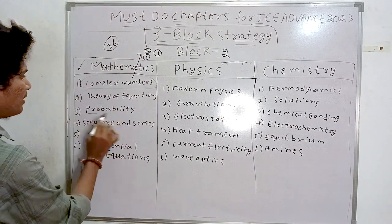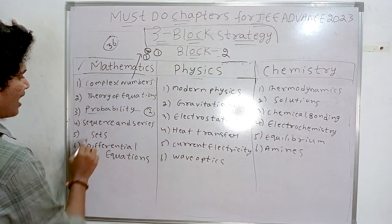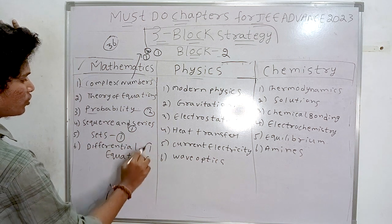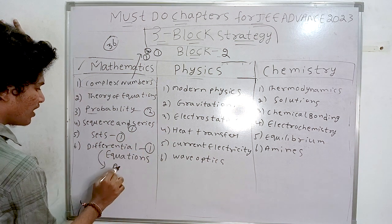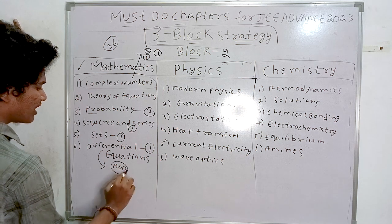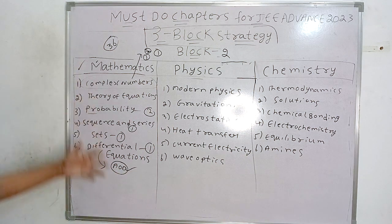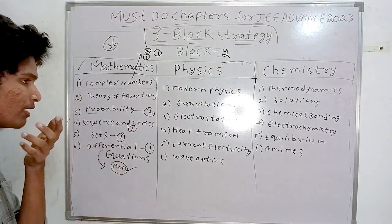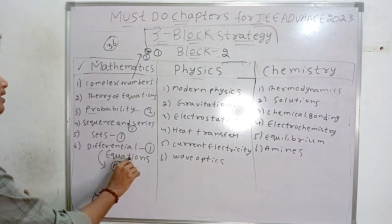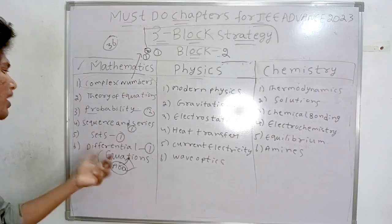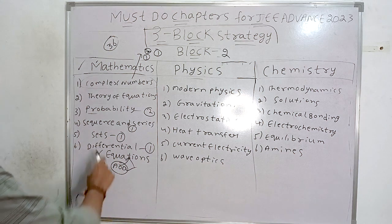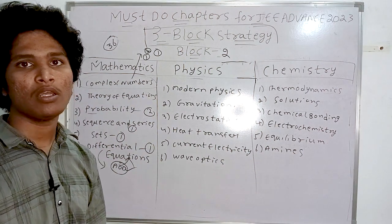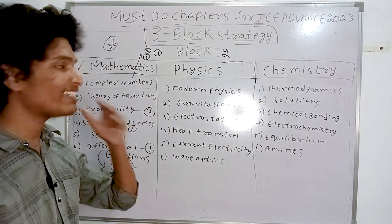Other block two math chapters: theory of equations, probability (two questions), sequence and series (one question), sets (one question), and differential equations (one question). Differential equations also involve a mixture with AOD and definite integration. Prepare block two if you have time; if not, at least complete block one.